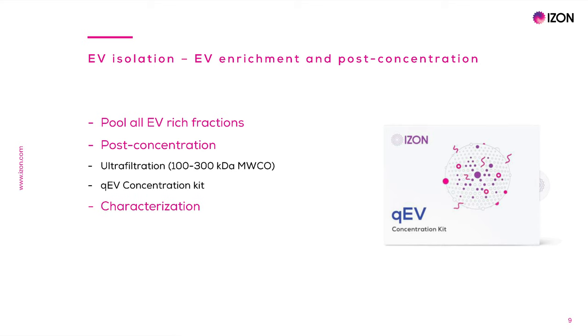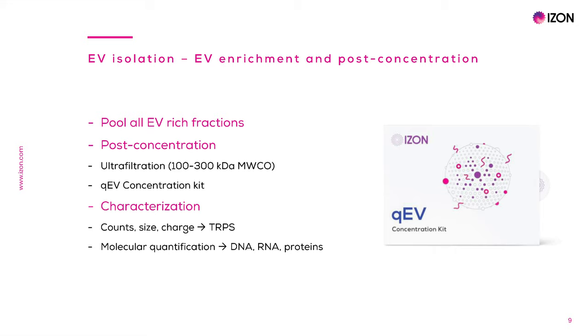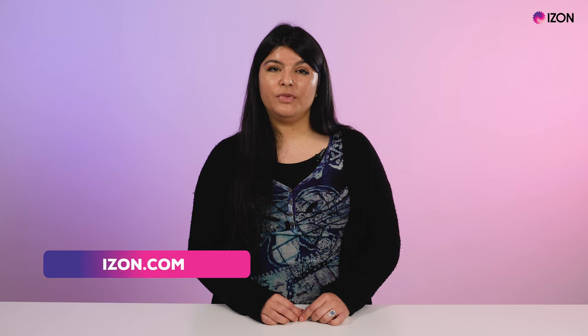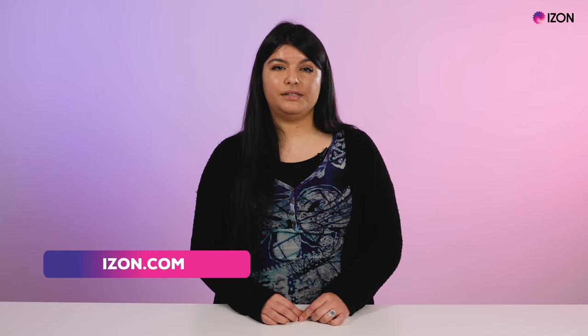Finally, sample characterization can be performed with EV count, size and charge assessment by TRPS. Molecular profiling can be done by quantification of DNA, RNA, and proteins present in EVs. Presence of population-specific EV markers can be assessed by Western blot assays, or visualization can be done by microscopic techniques. Thank you for watching and please visit izon.com for application notes and guides to help you work with different nanoparticle samples.